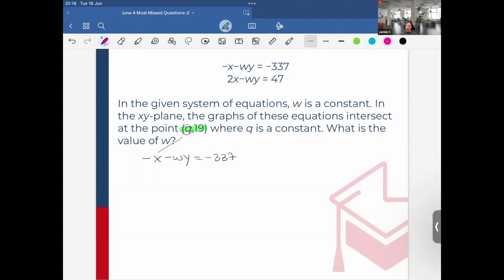So this would be negative q minus 19w equals negative 337. The next equation, it's 2x minus wy equals 47. So same thing. I'll be substituting the q in here for x and the 19 for y. So that will give me 2q minus 19w equals 47.